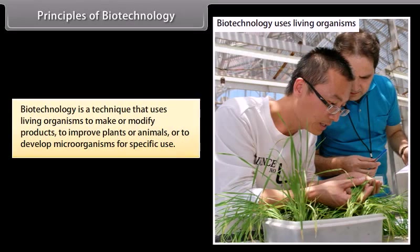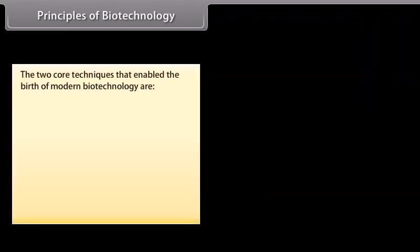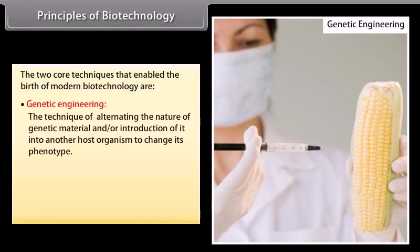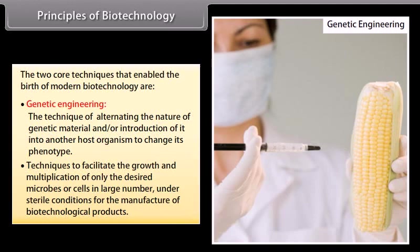Principles of biotechnology: Biotechnology is a technique that uses living organisms to make or modify products, to improve plants or animals, or to develop microorganisms for specific use. The two core techniques that enable the birth of modern biotechnology are: genetic engineering — the technique of altering the nature of genetic material or introduction of it into another host organism to change its phenotype — and techniques to facilitate growth and multiplication of only the desired microbes or cells in large numbers under sterile conditions for the manufacture of biotechnological products.